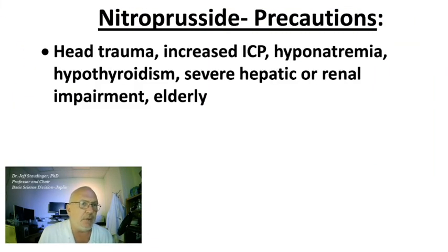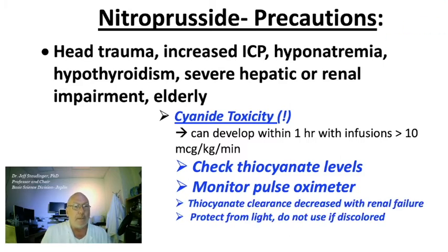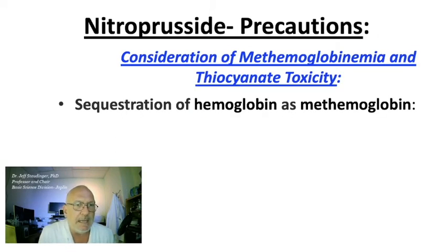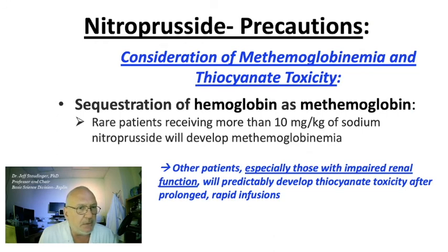Patients with head trauma, increased intracranial pressure, hyponatremia, hypothyroidism, hepatic or renal impairment, and the elderly are all at risk for cyanide toxicity. You need to check thiocyanate levels and monitor pulse oximetry. Patients with renal failure have a hard time clearing thiocyanate. This drug needs to be protected from light — don't use it if it's discolored. Use of this drug can sequester hemoglobin as methemoglobin. Rare patients receiving more than 10 mg/kg of sodium nitroprusside will develop this condition. Patients with impaired renal function will predictably develop thiocyanate toxicity after prolonged and rapid infusions.